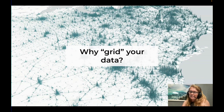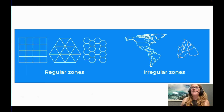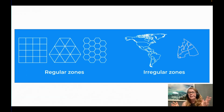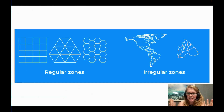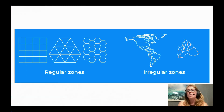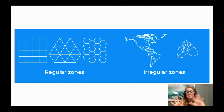So why grid your data in the first place? There are two main types of spatial zones. First, irregular zones — data in an irregular shape and irregular size — things like census tracks, output areas, national boundaries. A lot of data, particularly demographic data, is served in these irregular zones, such as census data or data from the World Bank, coming in this irregular zone format.